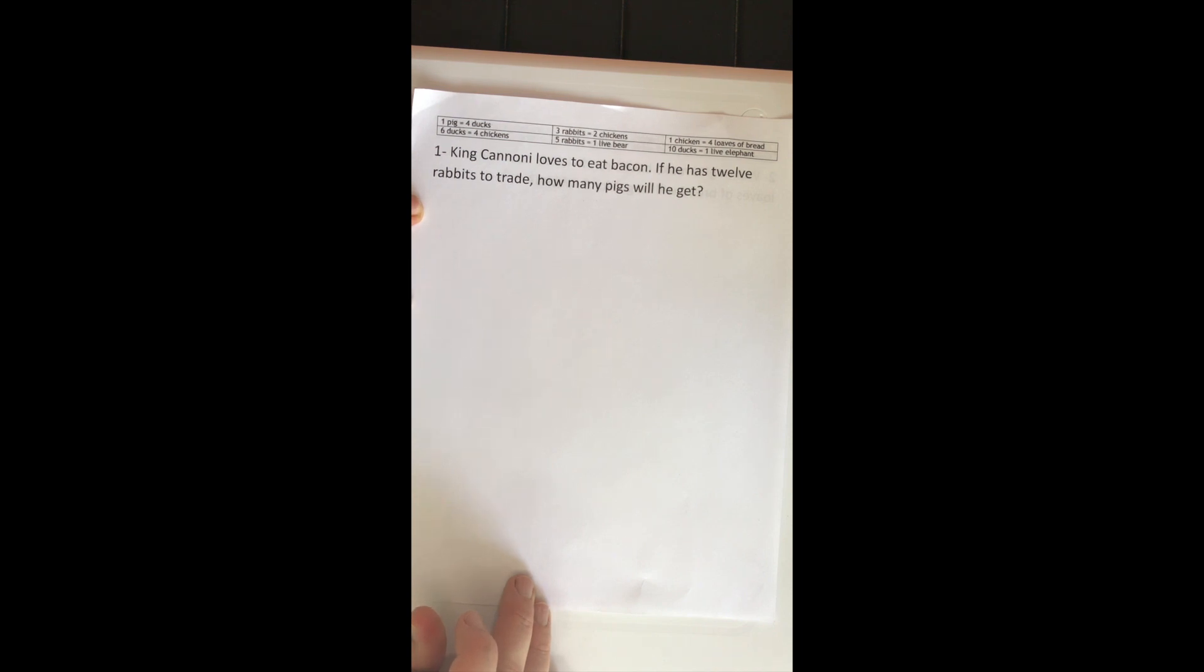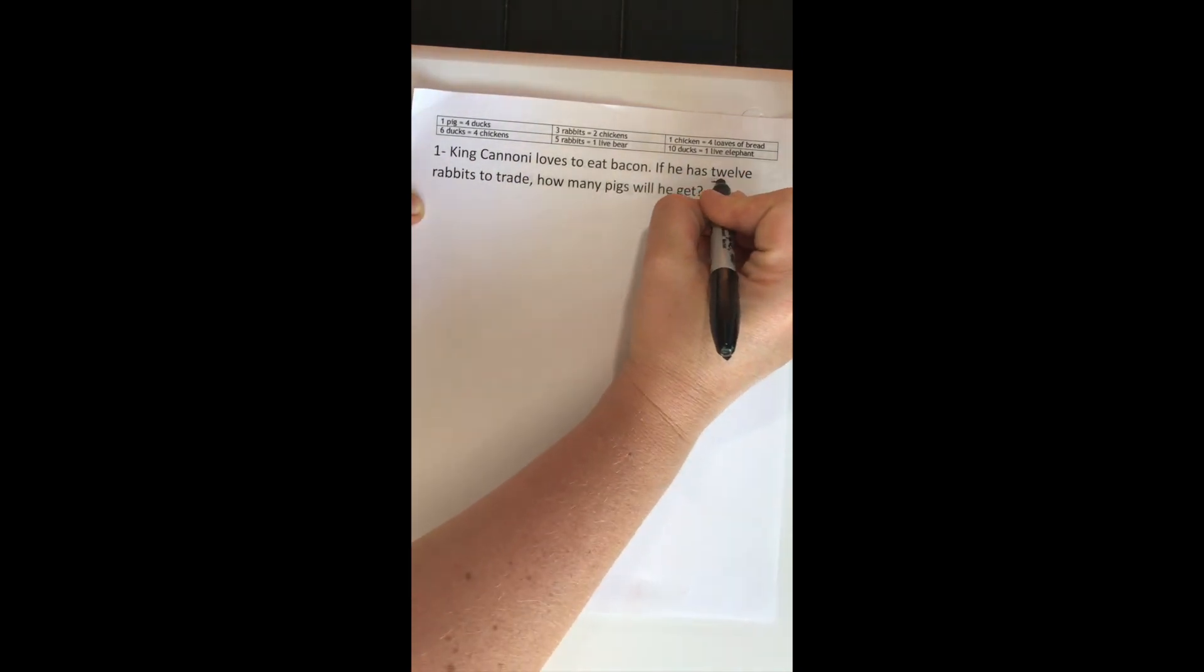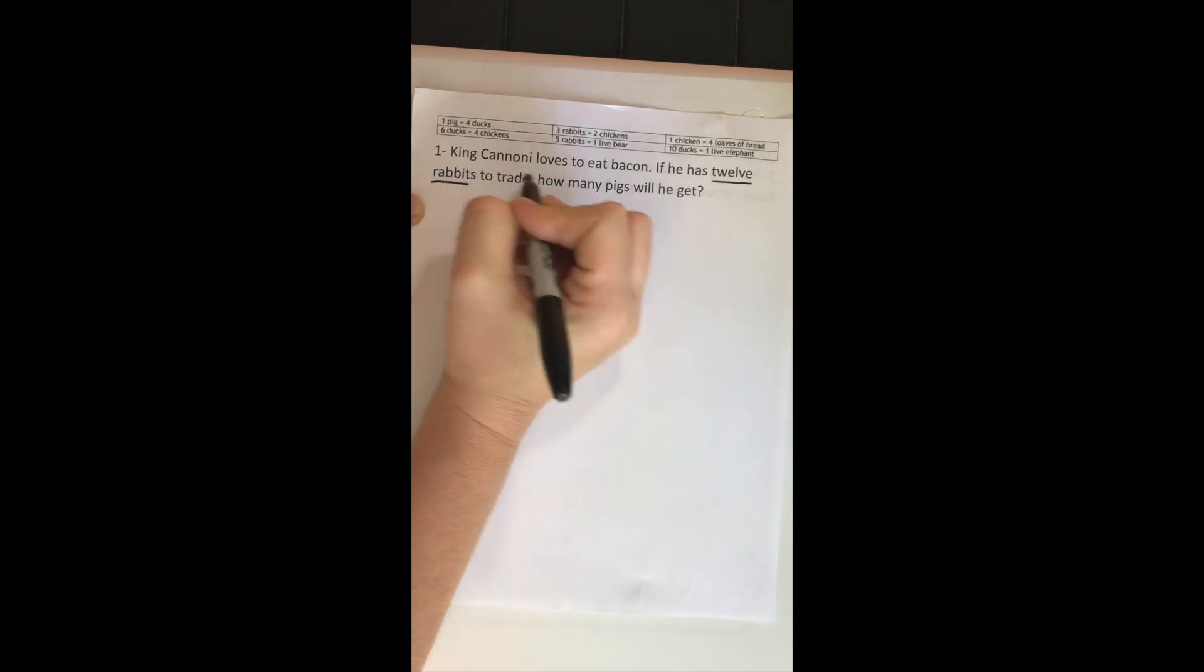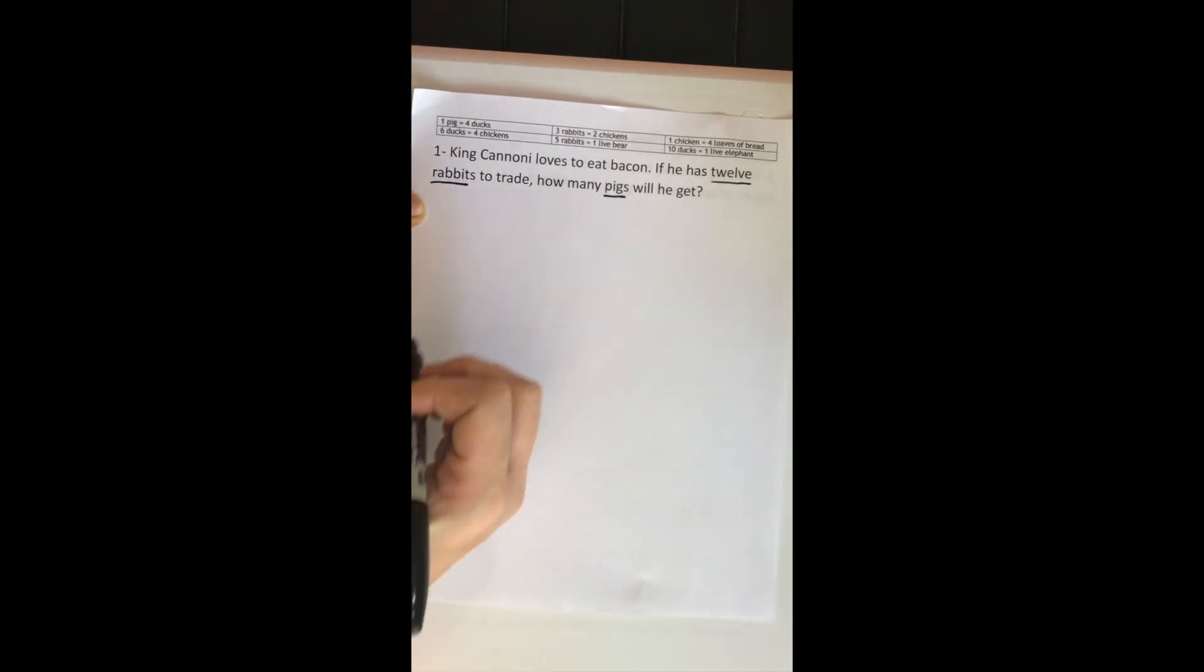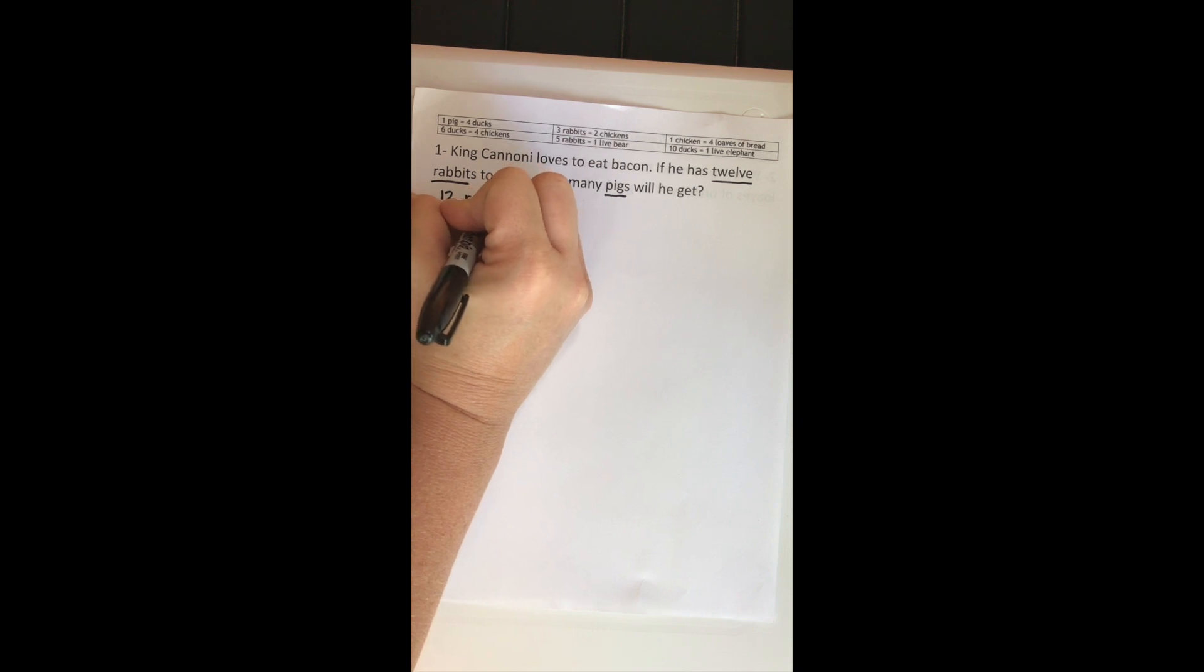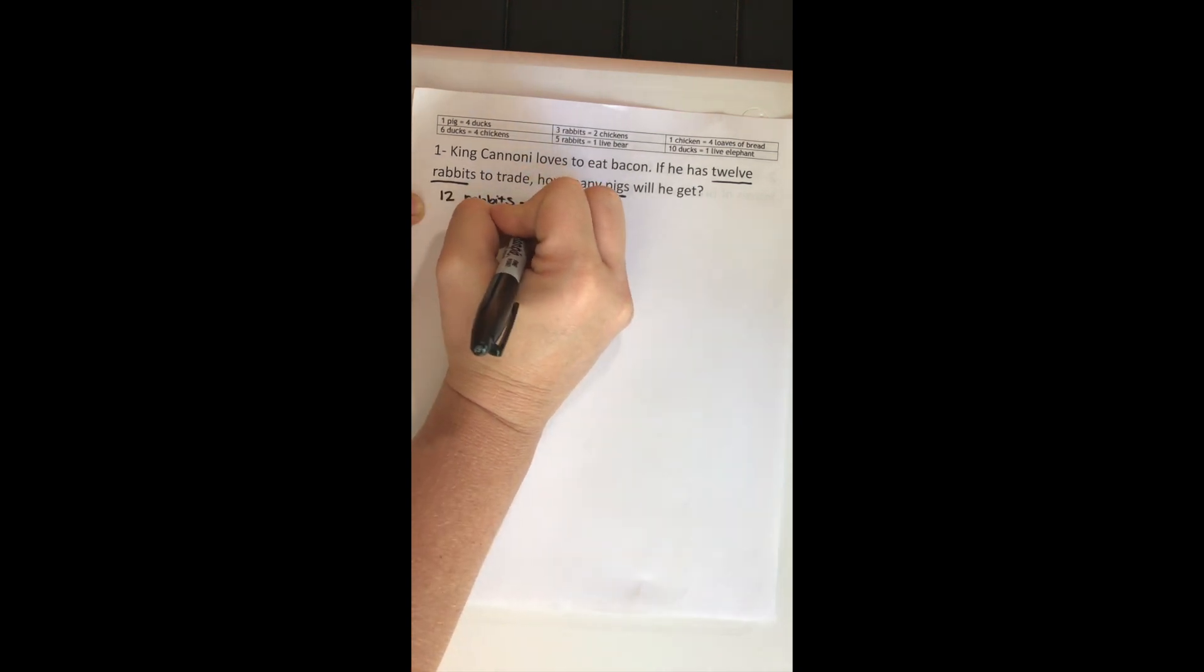I think the easiest way to help our students tackle this problem is for them to understand what they're starting with and what they're trying to get to. If we know that we're starting with 12 rabbits and we're trying to get to pigs, that's going to help us in the problem. So we have 12 rabbits, but we're trying to get to pigs.